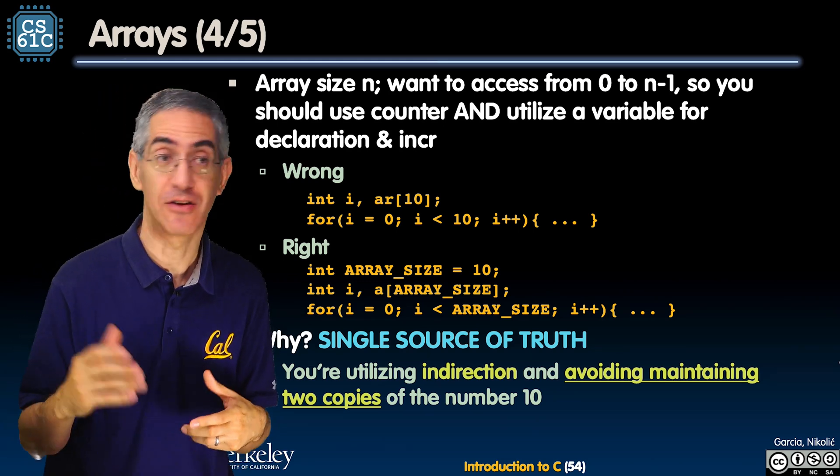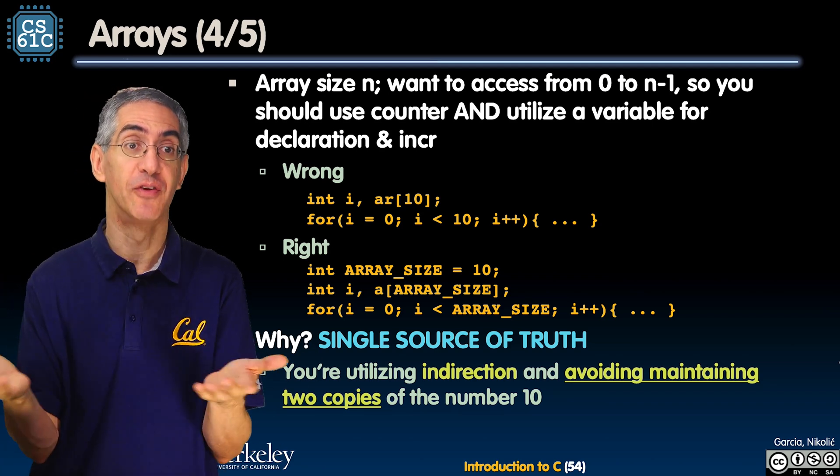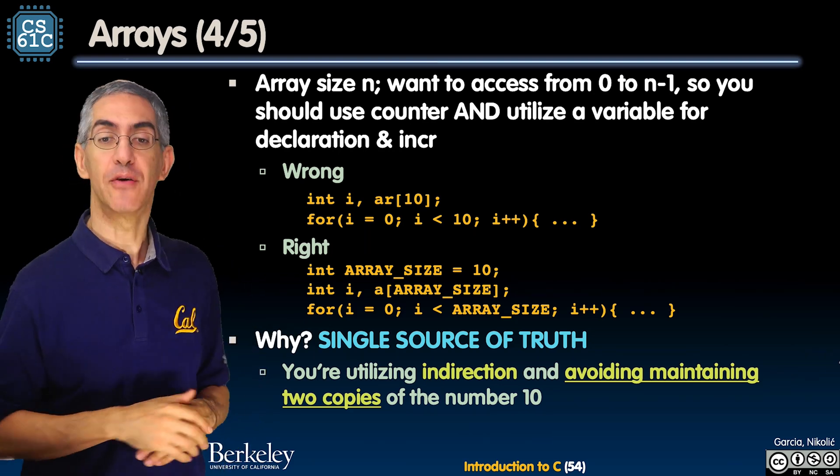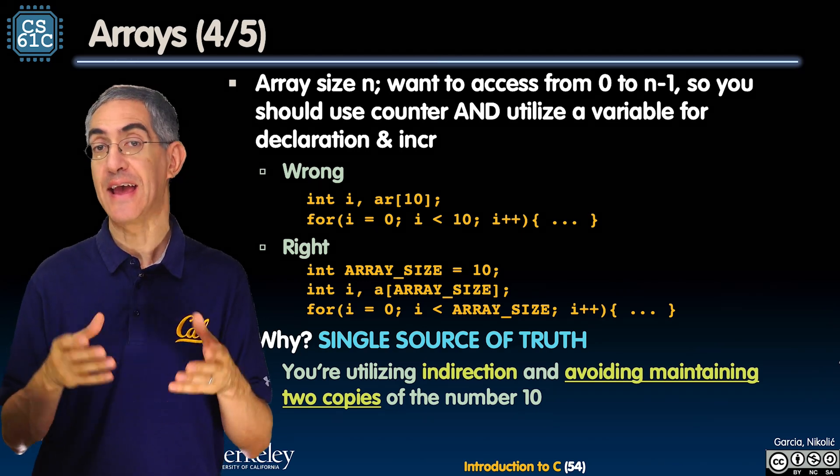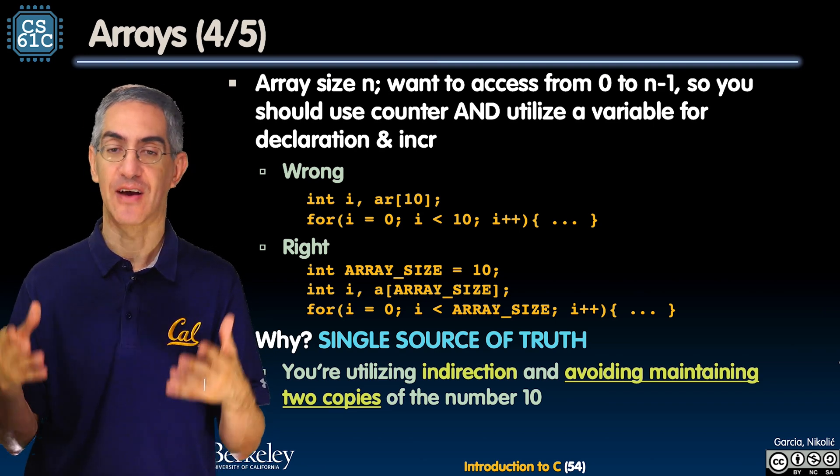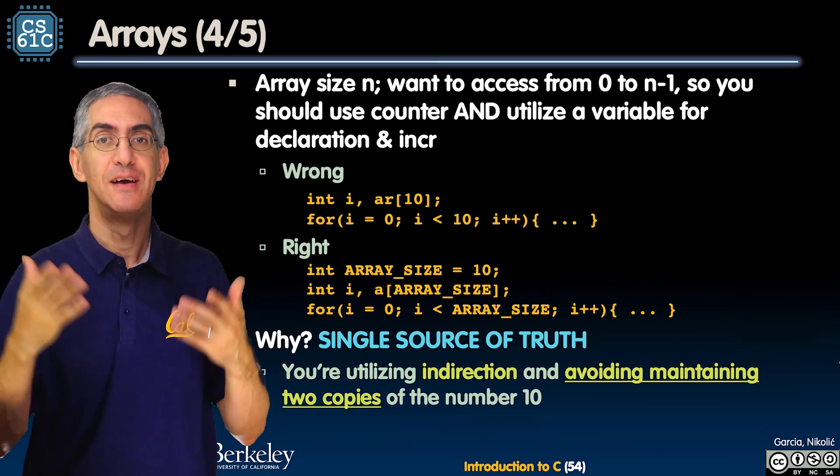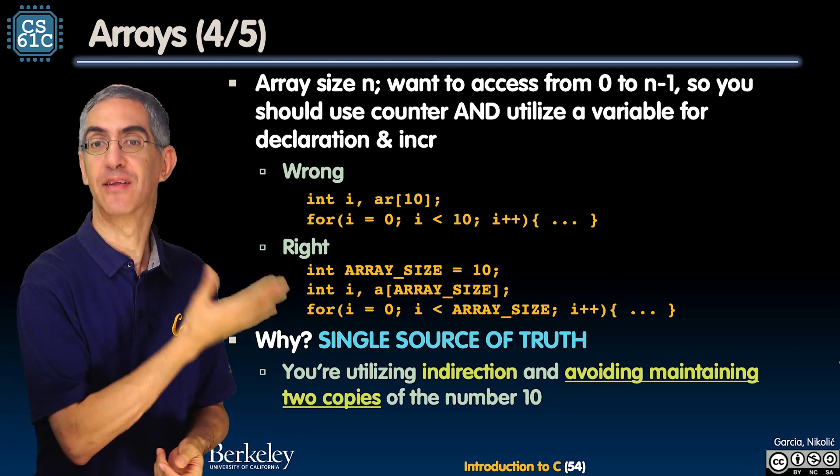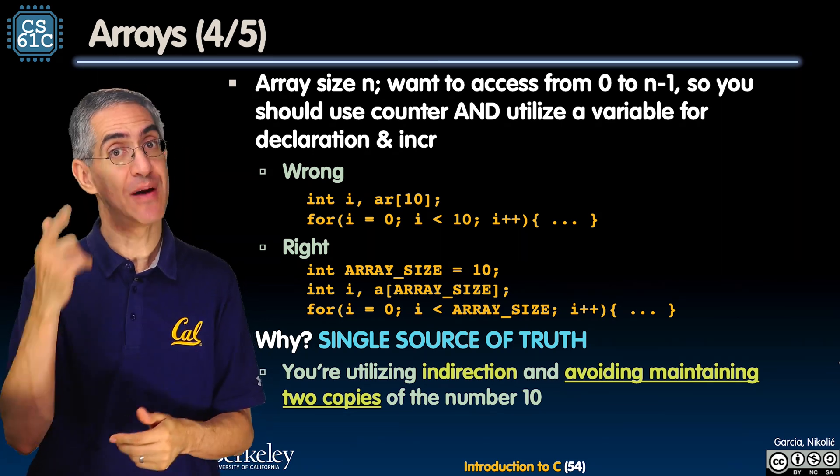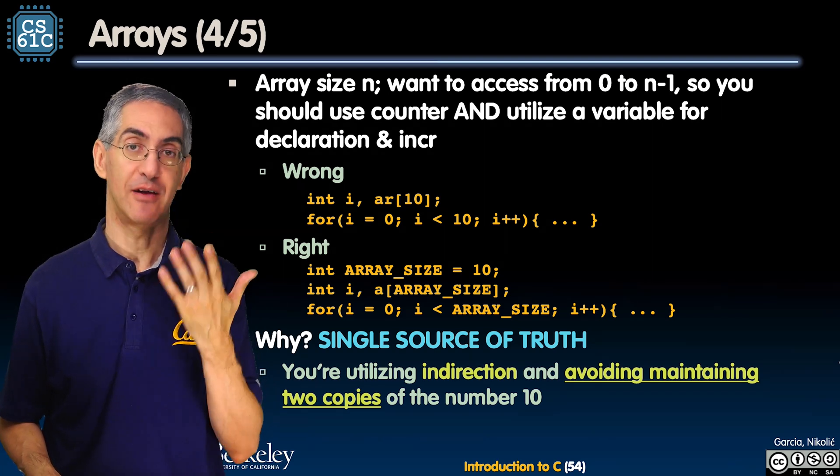Well one way to do it is you say int array_size = 10. Before C99 you'd have to #define array_size 10. Here int array_size equals 10, so int i, A[array_size]. This is a dynamic array. Again this came from C99 and now I can say for i=0; i<array_size. Now I only have one 10. If I want to make it 20 now I change it one place. You want to really have any hard-coded value have it there once. Use indirection - indirection can save you a lot of trouble and you don't have to maintain two copies of ten.